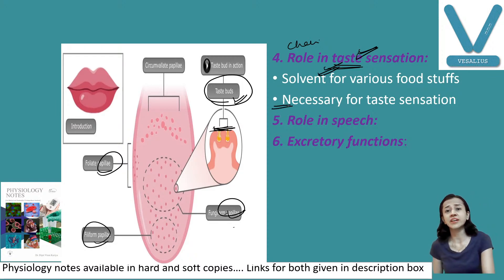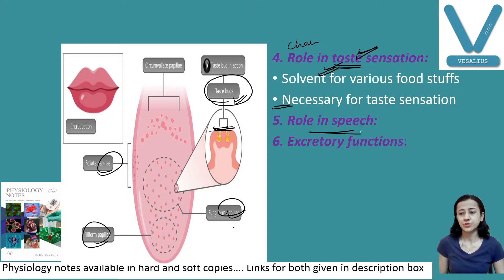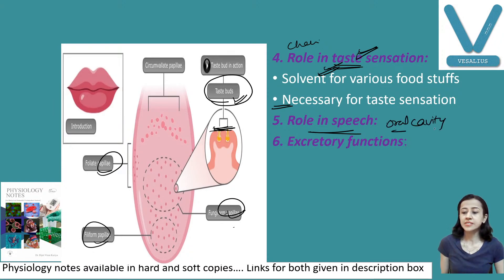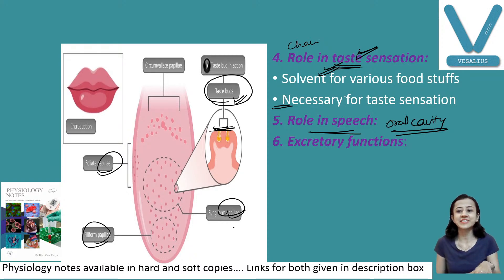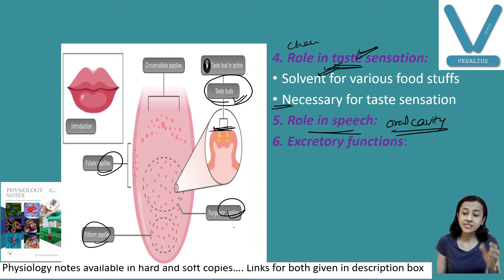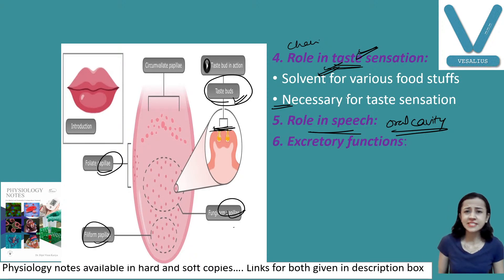Another important function of saliva is speech. Saliva lubricates our oral cavity — including the mouth, tongue, and teeth. You might have experienced that when going for a viva you cannot speak well, because exaggerated sympathetic activity results in decreased salivary secretion. When salivary secretion decreases, this lubricating function decreases and speech is affected. Saliva facilitates the movement of lips, tongue, and other parts of the oral cavity required for speech.